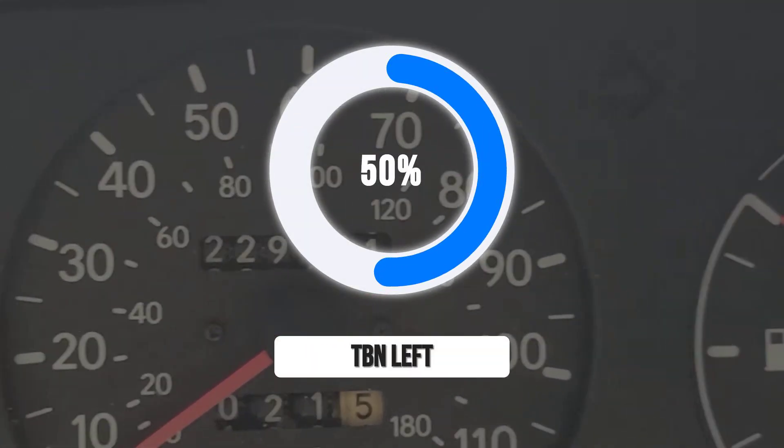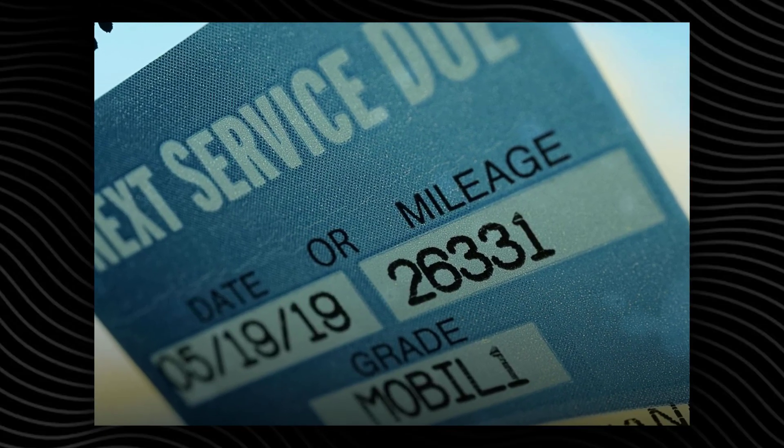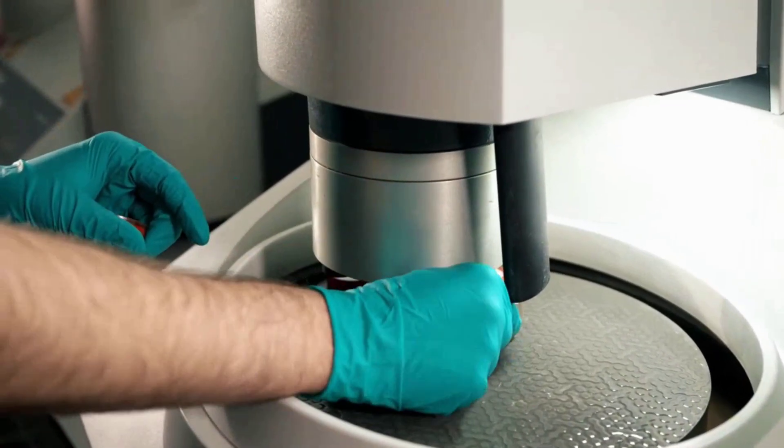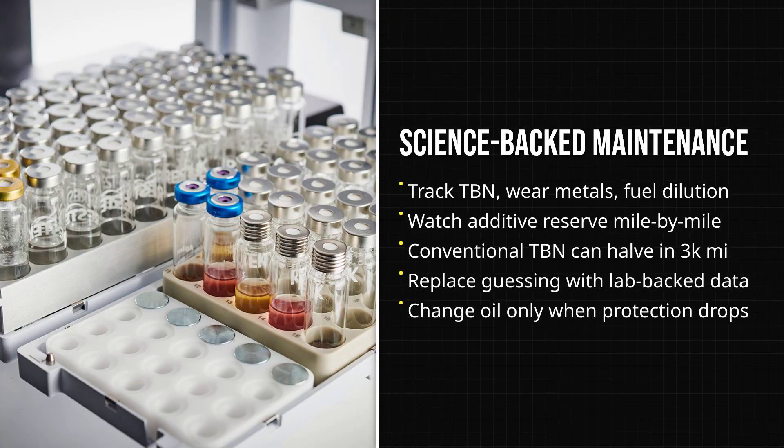Labs measure total base number by titration and they plot its decline as miles add up. With conventional oil, total base number can drop by half in just 3,000 miles, which is why short intervals matter for non-synthetic oils.